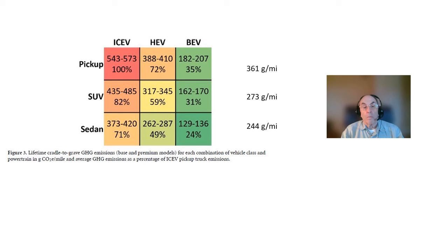The results are remarkably surprising. A gas-powered sedan emits on average 244 more grams per mile of greenhouse gases than an EV sedan. A gas-powered SUV emits 273 more grams per mile of greenhouse gases than an EV SUV. And a gas-powered pickup truck produces a whopping 361 more grams per mile of greenhouse gases than an EV pickup truck.